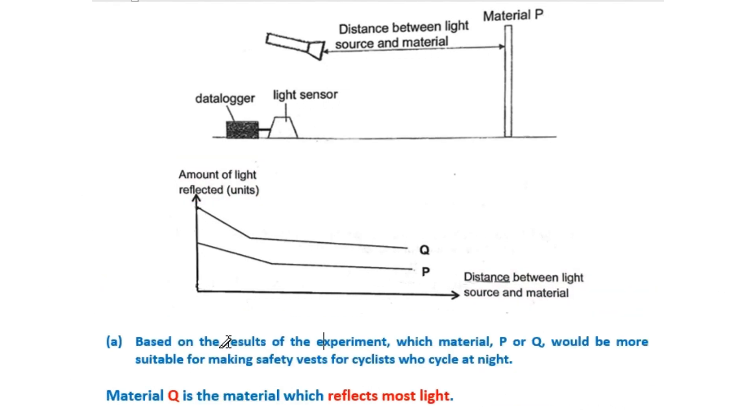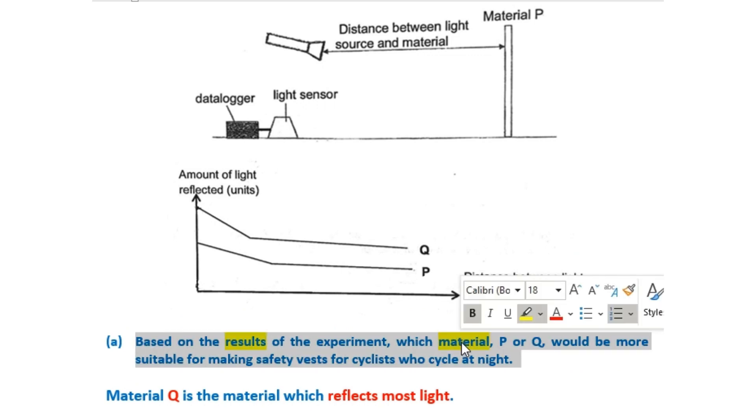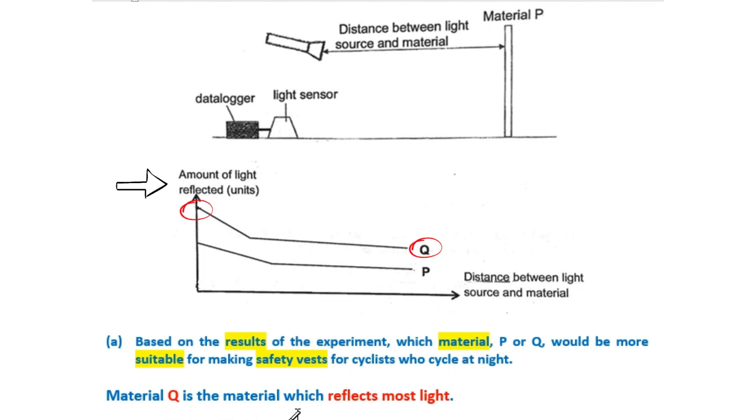Based on the results of the experiment, which material, P or Q, would be more suitable for making safety vests for cyclists who cycle at night? Material Q is the material which reflects most light.